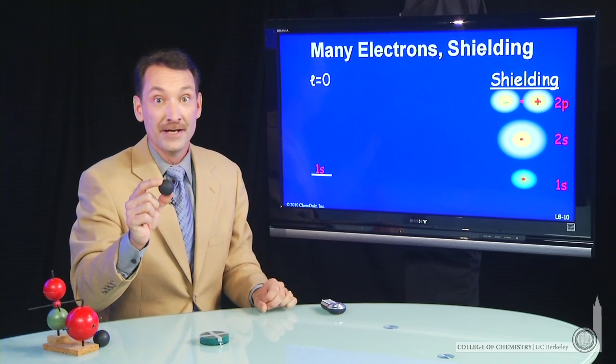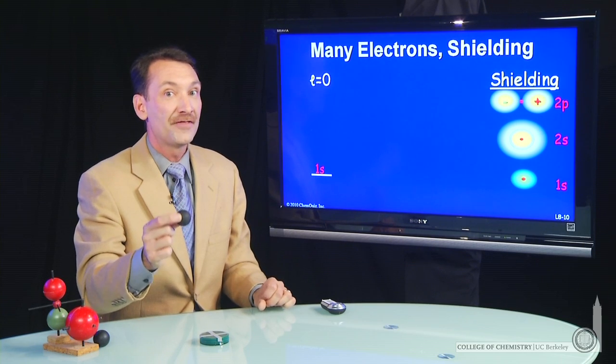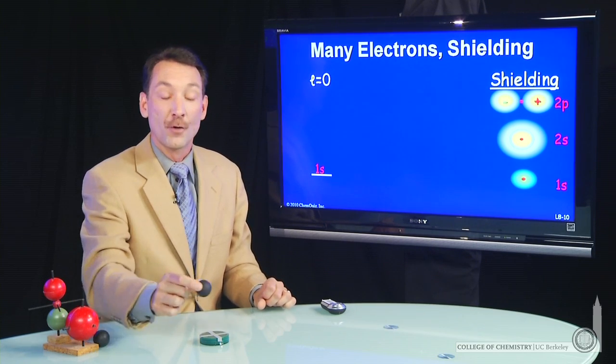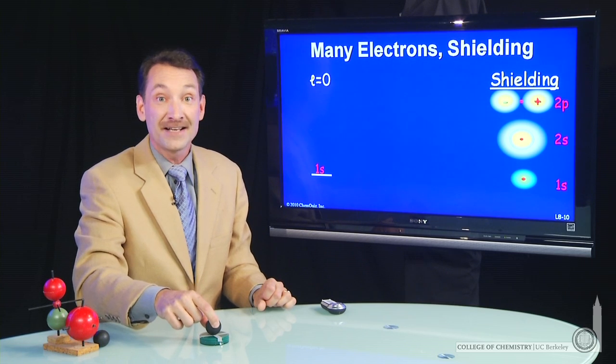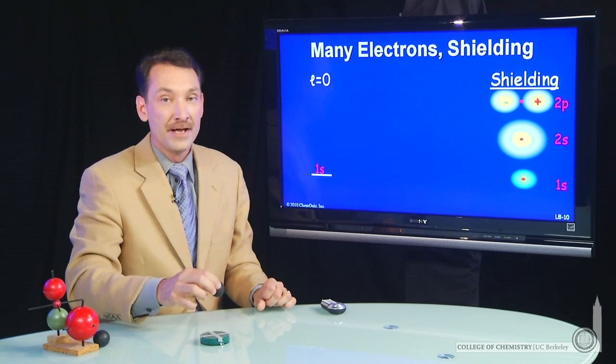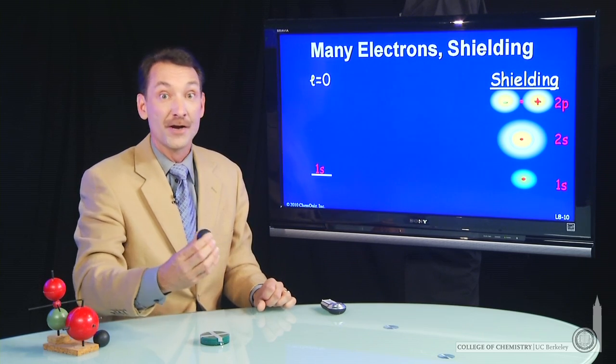An s electron has no node at the nucleus. That is, the orbitals are aligned such that the electron has access to the nucleus. If you're a p electron or a